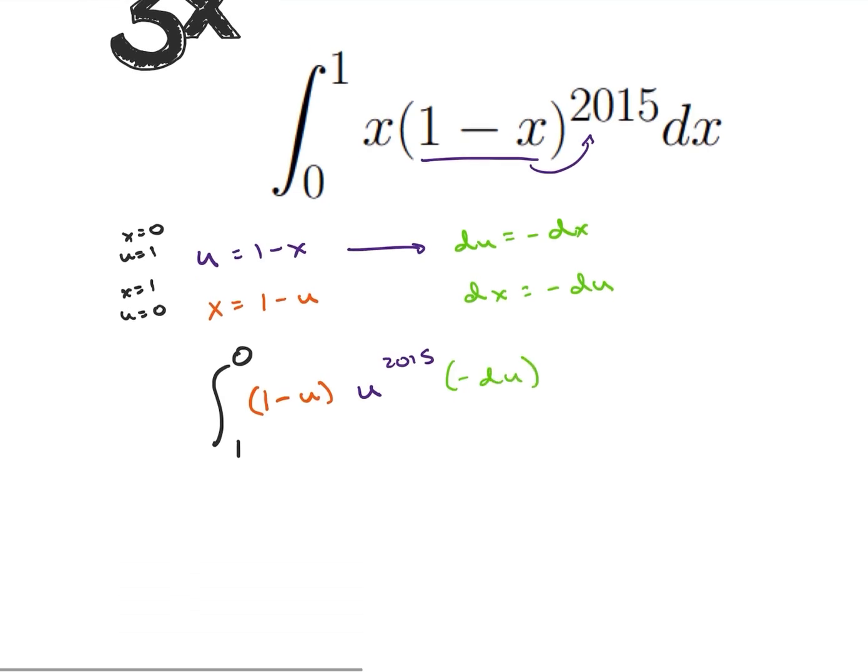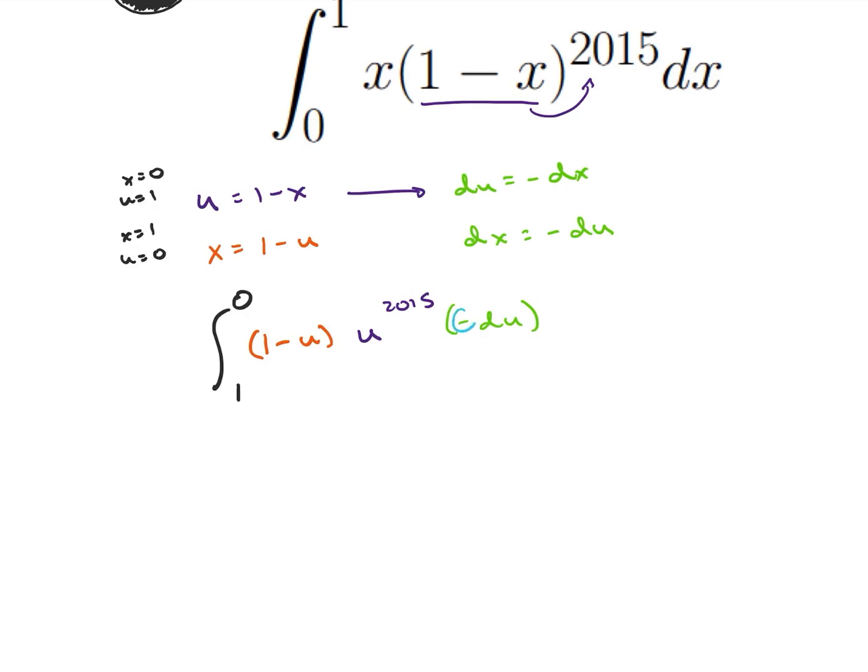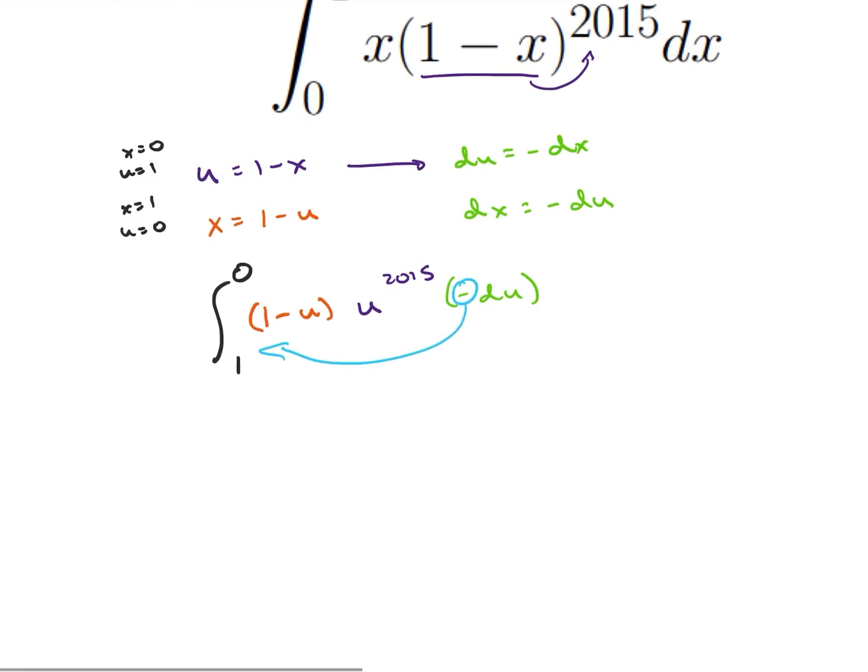So what I notice is if I take this negative sign right here, I can reverse my order of integration. So then I can also multiply through. I'm going to get u to the 2015 minus u to the 2016 du.